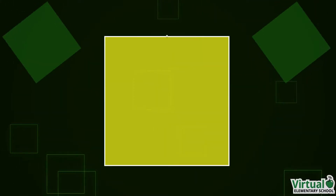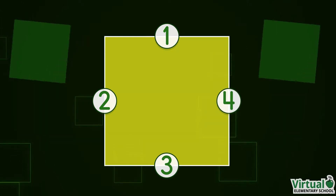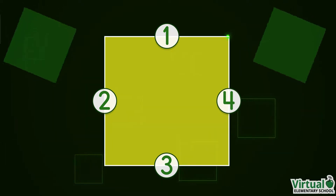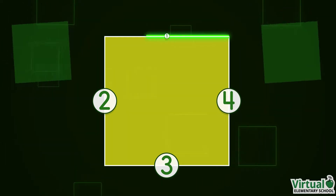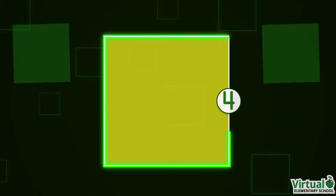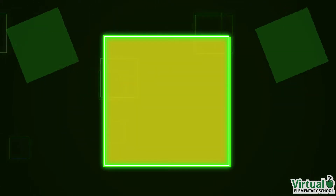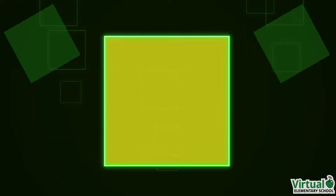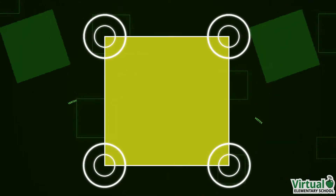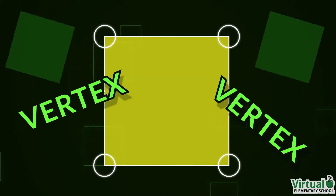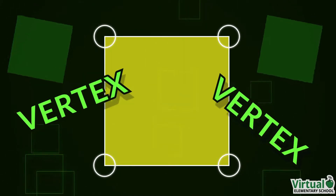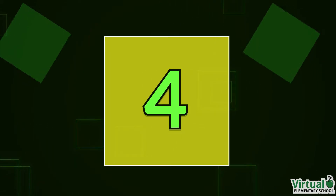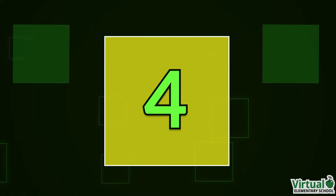Quadrilaterals are shapes with four sides. They are polygons made of straight connecting lines. Where the lines meet is called a vertex. Quadrilaterals have four vertices. Which polygon's next?